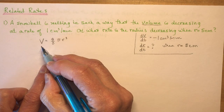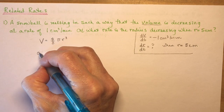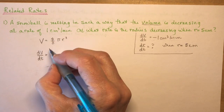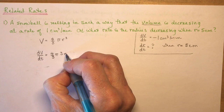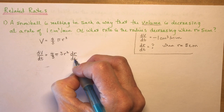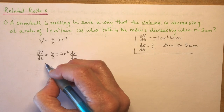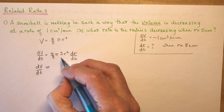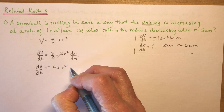Going back to the volume equation, I'm now going to take the derivative. The derivative of volume is dv/dt, and the derivative of four-thirds pi r cubed — leaving the constants four-thirds pi — the derivative of r cubed is three r squared dr/dt. Anytime you take the derivative of one of the variables you have to include the derivative with respect to time. Simplifying, the threes cancel and we get dv/dt equals four pi r squared dr/dt.